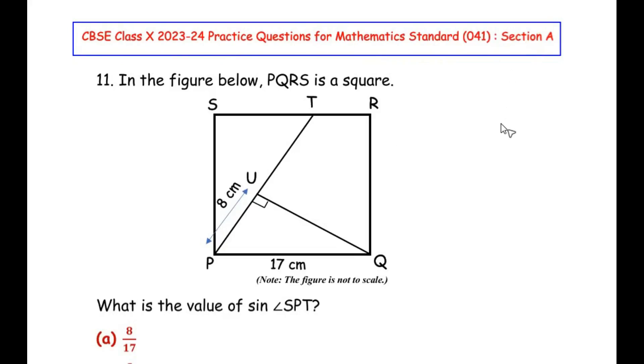Section A, which is multiple choice questions for one mark each. Now this question is from the introduction to trigonometry chapter. In the figure below, PQRS is a square. What is the value of sine of angle SPT?